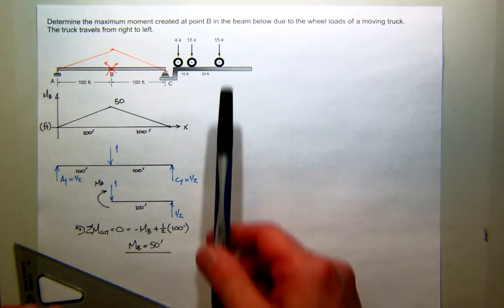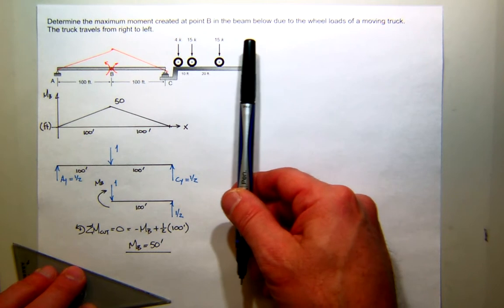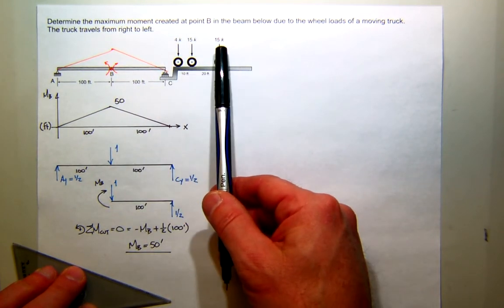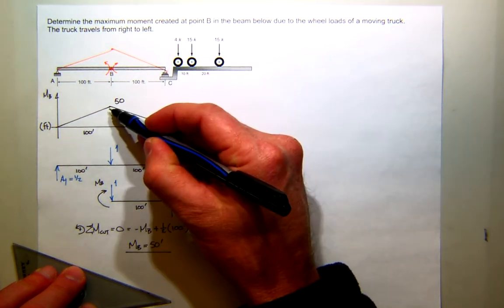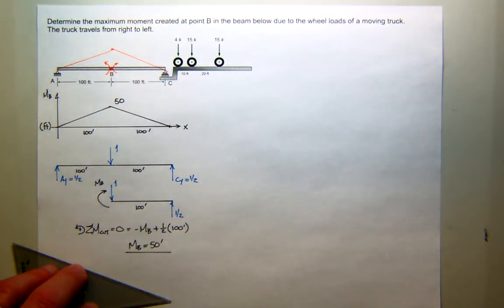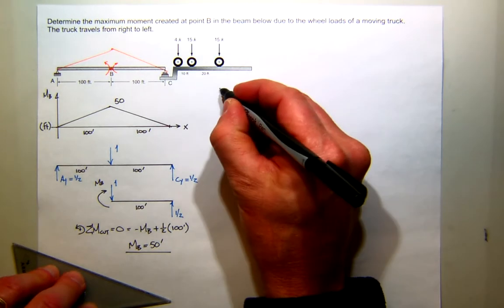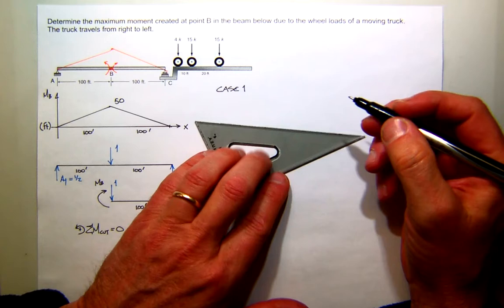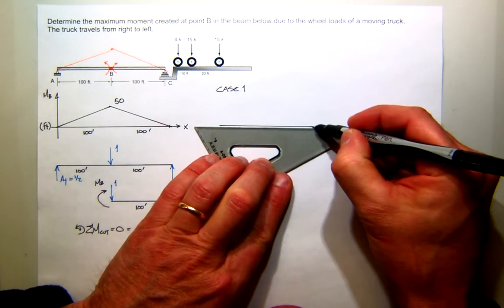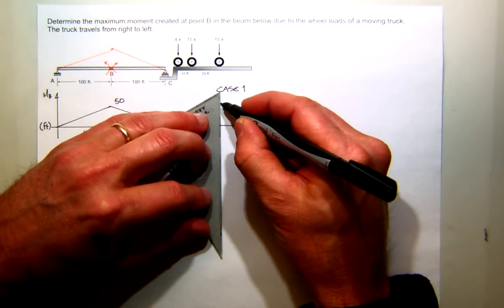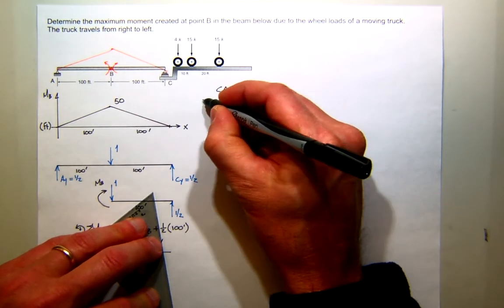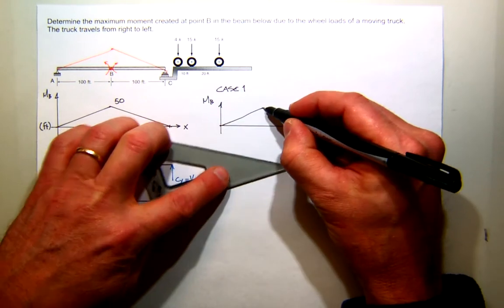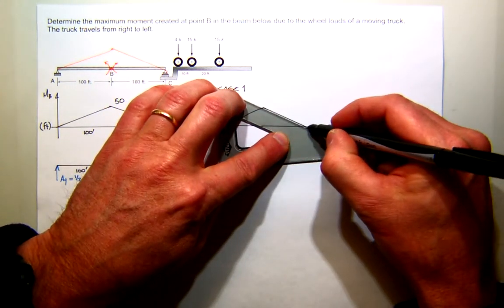Now what do we do? I move my set of loads, starting from the right, across the structure, and I let each one of these loads, in turn, stop where? At the maximum value. Everybody see that? Let's start with what I'll call case one. I'm going to, kind of in a small version, redraw my moment at B.